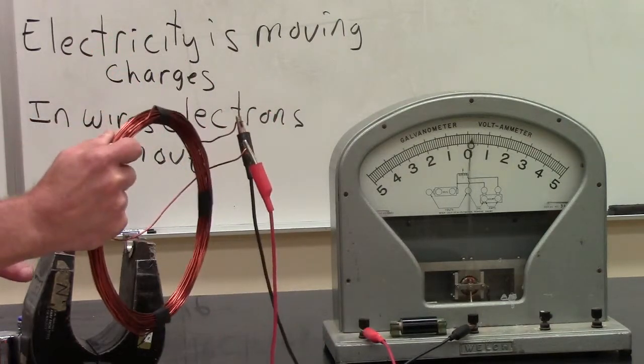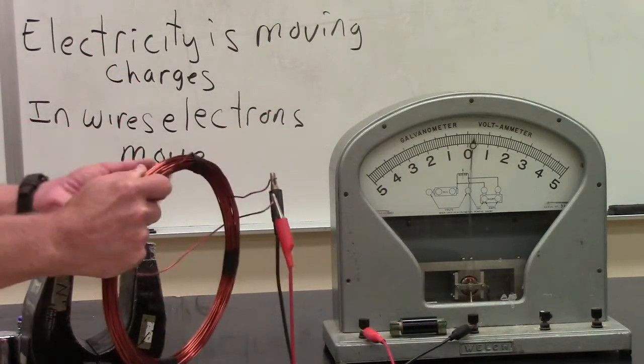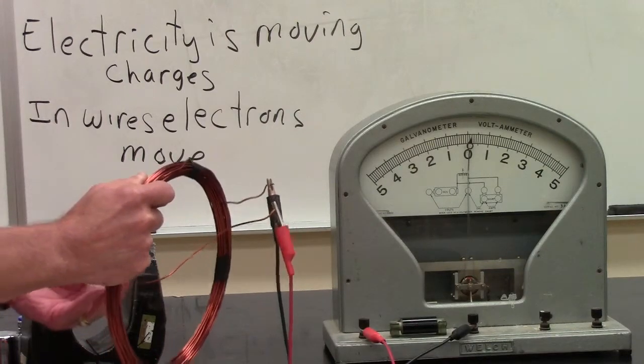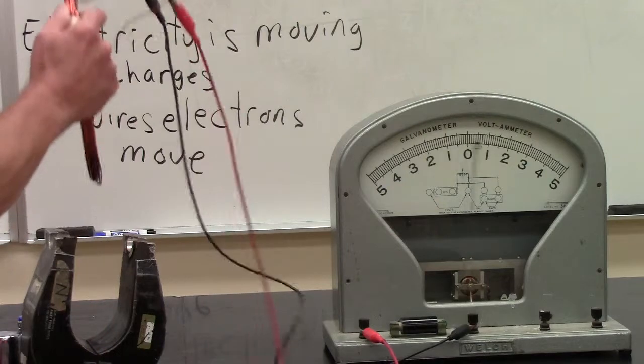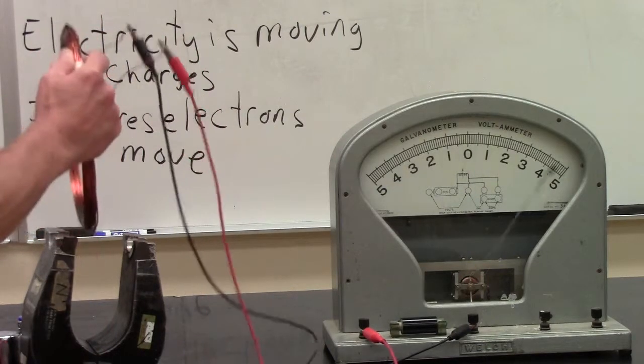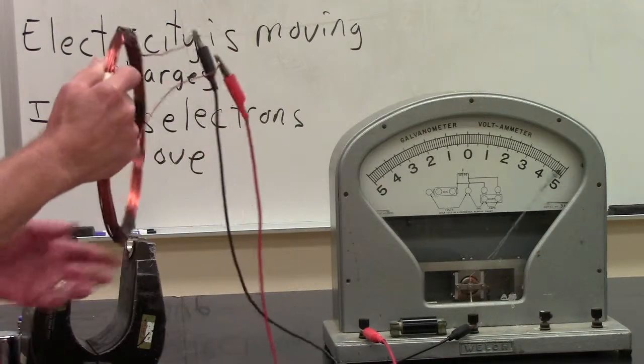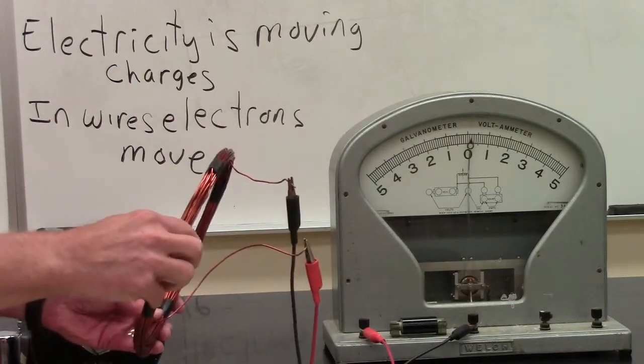The magnetic field produced by the magnet can interact with the electrons in this copper coil and turn the physical motion of the copper coil to the physical motion of electrons, which we call electricity. And this is how most electricity is made.